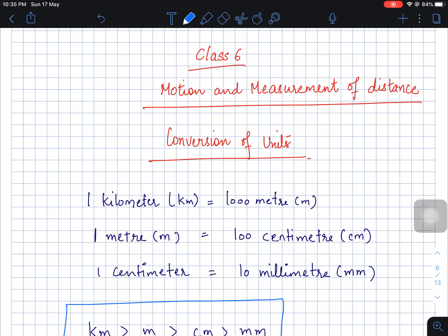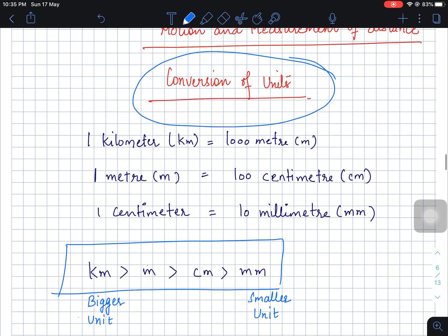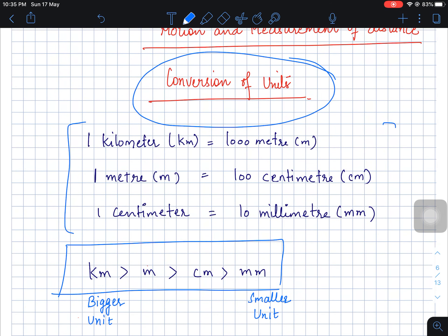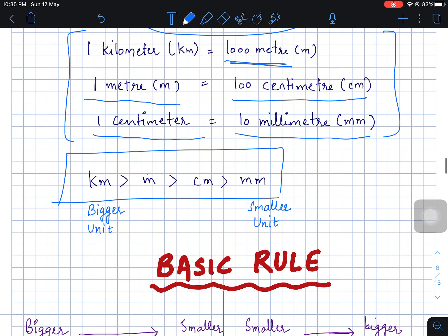Hello everyone, today in motion and measurement of distance we will be talking about conversion of units. First, let us talk about some basic conversions: 1 km is equal to 1000 m, 1 m is equal to 100 cm, and 1 cm is equal to 10 mm.